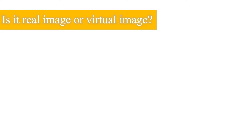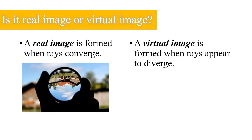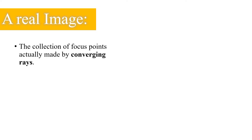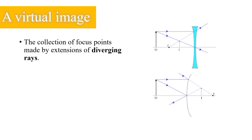Many students get confused with the difference between a real image and a virtual image. A real image is formed when rays converge, while a virtual image is formed when rays appear to diverge. Furthermore, a real image is formed by the collection of focus points actually made by converging rays produced after incident rays hit a concave mirror, while a virtual image is formed by the collection of focus points made by extensions of diverging rays produced after incident rays hit a convex mirror.